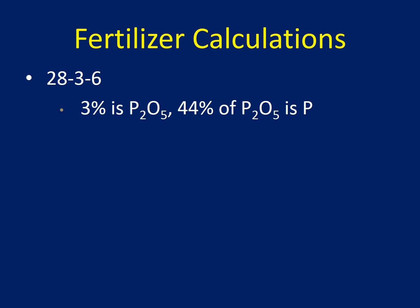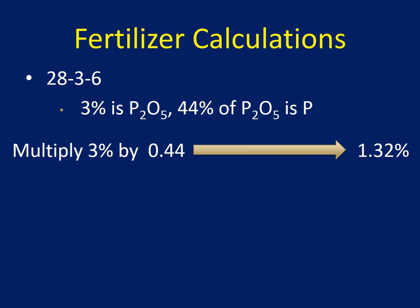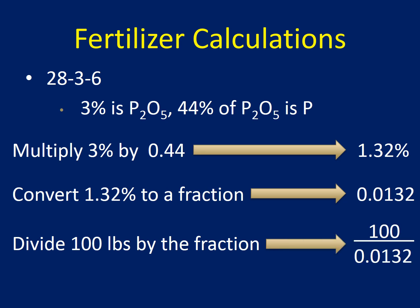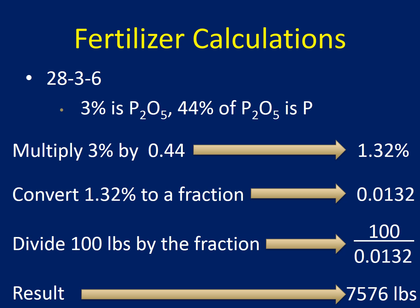For phosphorus: we know there's 3% P2O5 in the fertilizer, and 44% of that P2O5 is actually phosphorus. So we multiply 3% by 0.44 and end up with 1.32% — that's how much phosphorus is actually in the fertilizer. We then convert 1.32 to a fraction and divide the hundred pounds we need by that fraction, giving us 7,576 pounds. As noted, you'd most likely want a different fertilizer product with more phosphorus, but this illustrates the calculation.